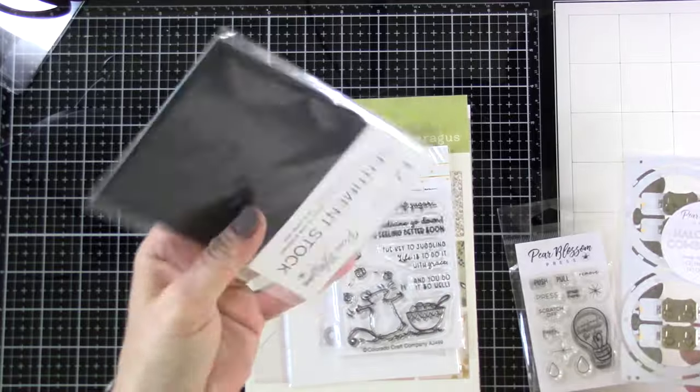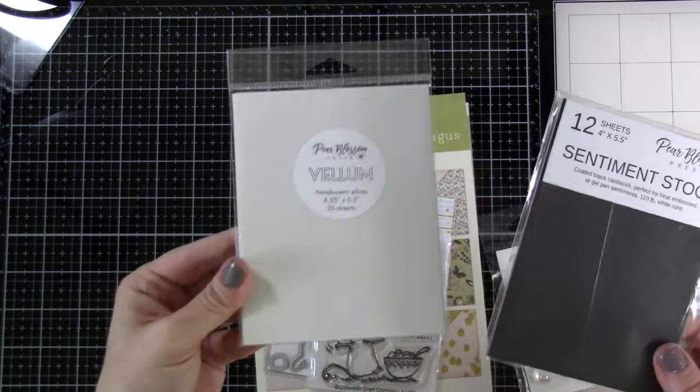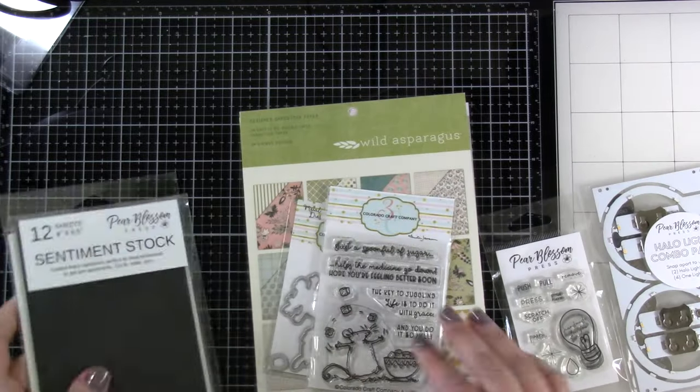We also have some black sentiment stock. I love this stuff for white heat embossing, and then we also have some of the Pear Blossom Press vellum. Super great stuff.